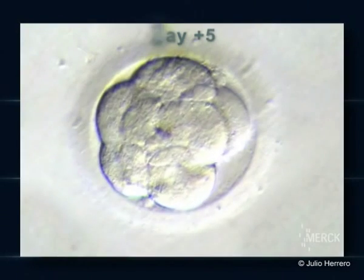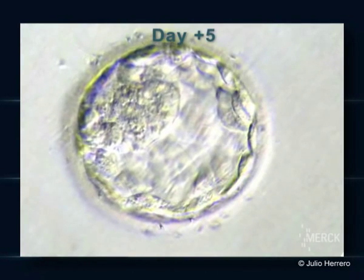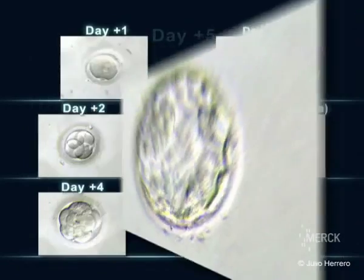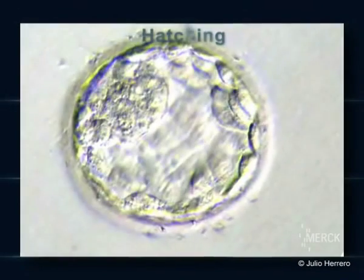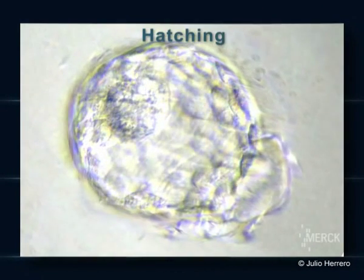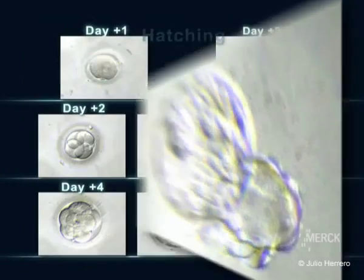On day five, the embryo contains more than 100 cells. In the center, there is a fluid-filled cavity. Finally, the blastocyst will shed the membrane that surrounds it. This is called hatching.